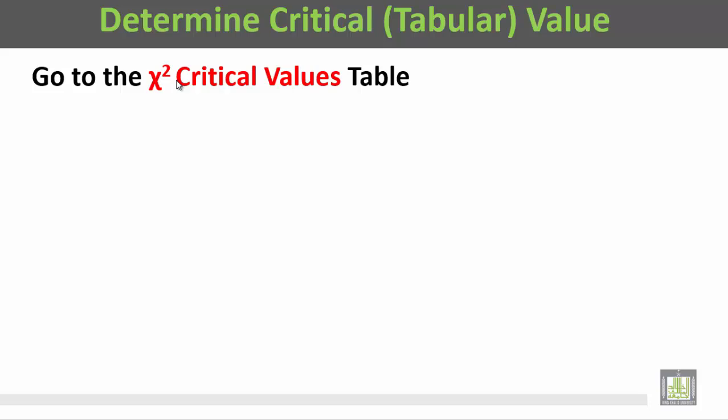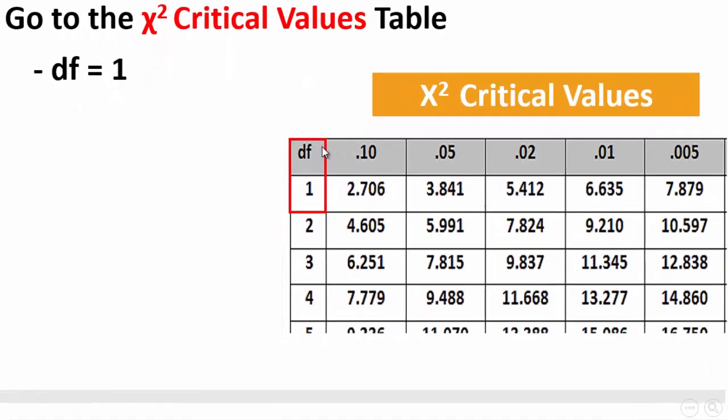This is the table for the chi-square critical values. With the degree of freedom, we will choose the row which starts by 1 because the degree of freedom is equal to 1.